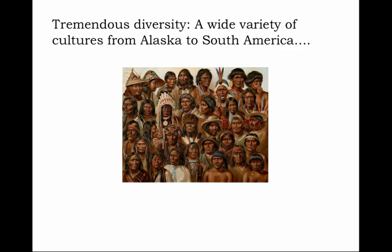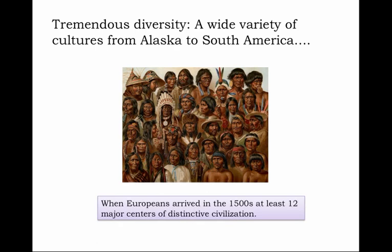It's typical for us to stereotype or condense the native peoples of America into a single Indian type — the teepee-dwelling, buffalo-hunting type. And certainly that would be appropriate as a description of the native plains people. But consider this: from Alaska in the north to Tierra del Fuego, the tip of South America, there was tremendous diversity among native peoples — a bewildering array of cultures. And when Europeans arrived in the 1500s, at least 12 major centers of distinctive civilization populated the hemisphere.